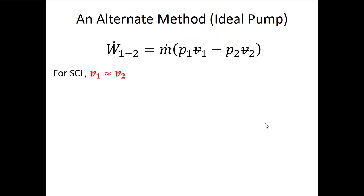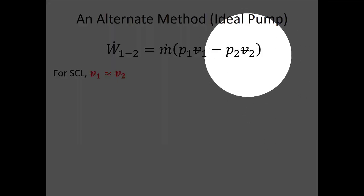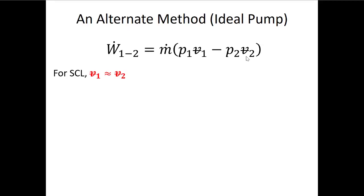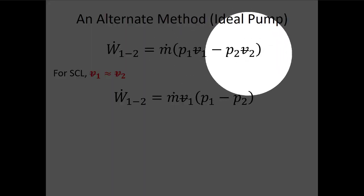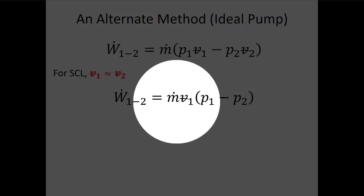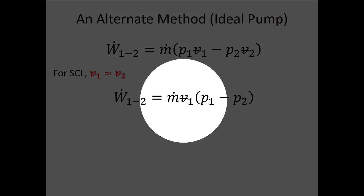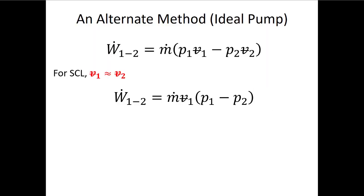The internal energies cancel, and for sub-cooled liquids the specific volume doesn't change much — liquid water's specific volume is always around 1/1000, but it does change a little. So we say specific volume at state 2 is approximately equal to specific volume at state 1. Factoring out the common specific volume, the power consumed by the pump equals the mass flow rate times the specific volume times the change in pressure.